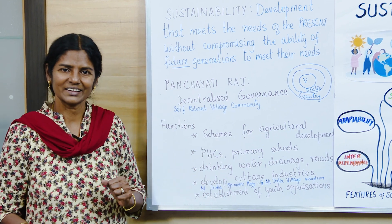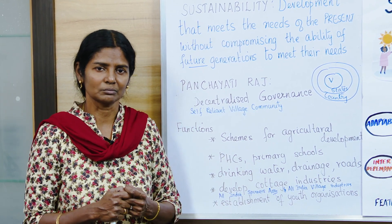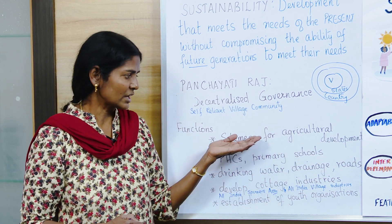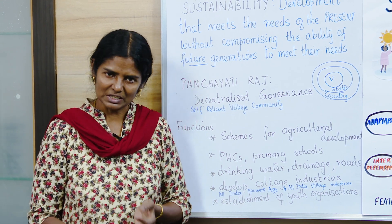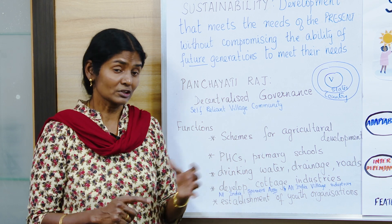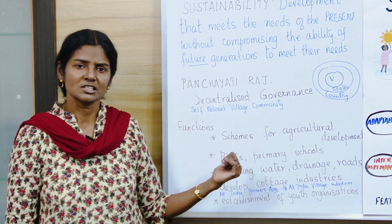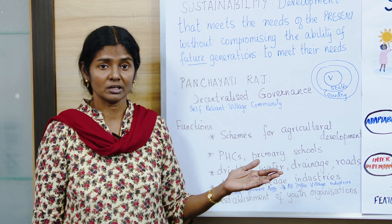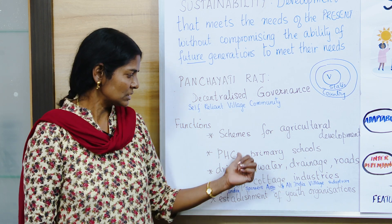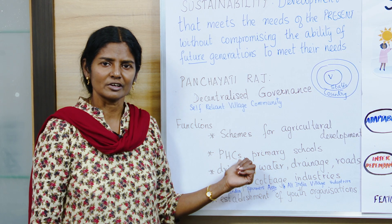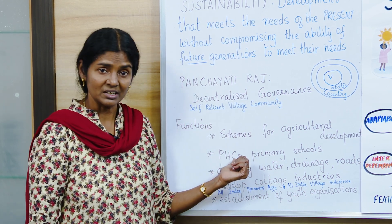The functions of Panchayati Raj include: agricultural development — since most people depend on agriculture, there are many schemes implemented, including loans for fertilizers, pesticides, seeds, and tractors. Another function is Primary Health Centers (PHCs) — in many villages, people had to walk 10 to 15 kilometers to reach a hospital, and by the time they arrived the patient would be very sick. With PHCs in every village, medical care is provided locally.